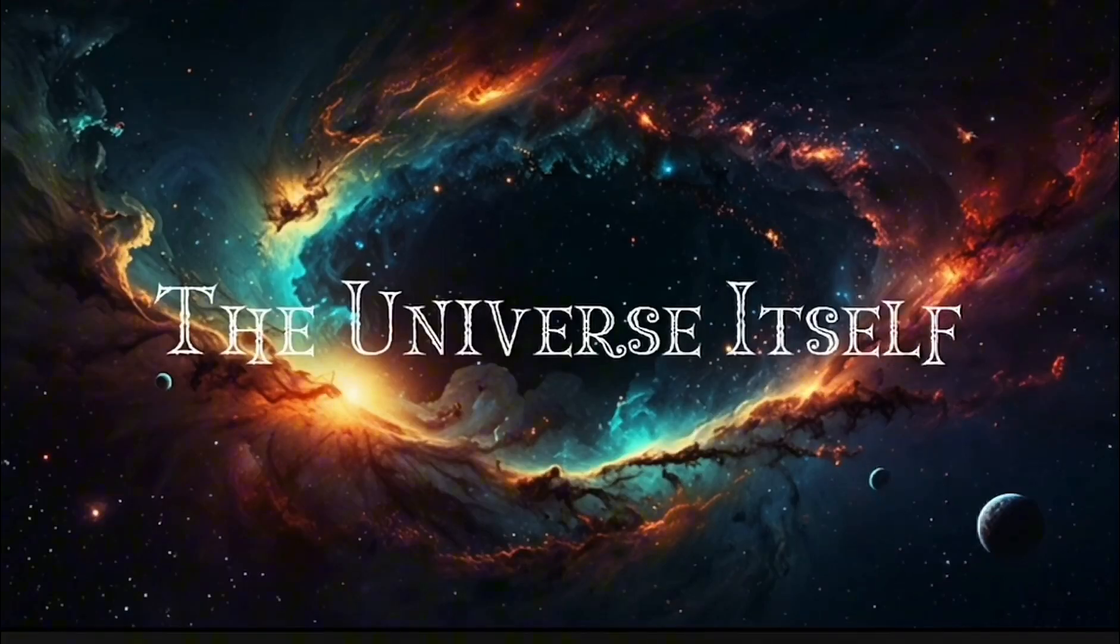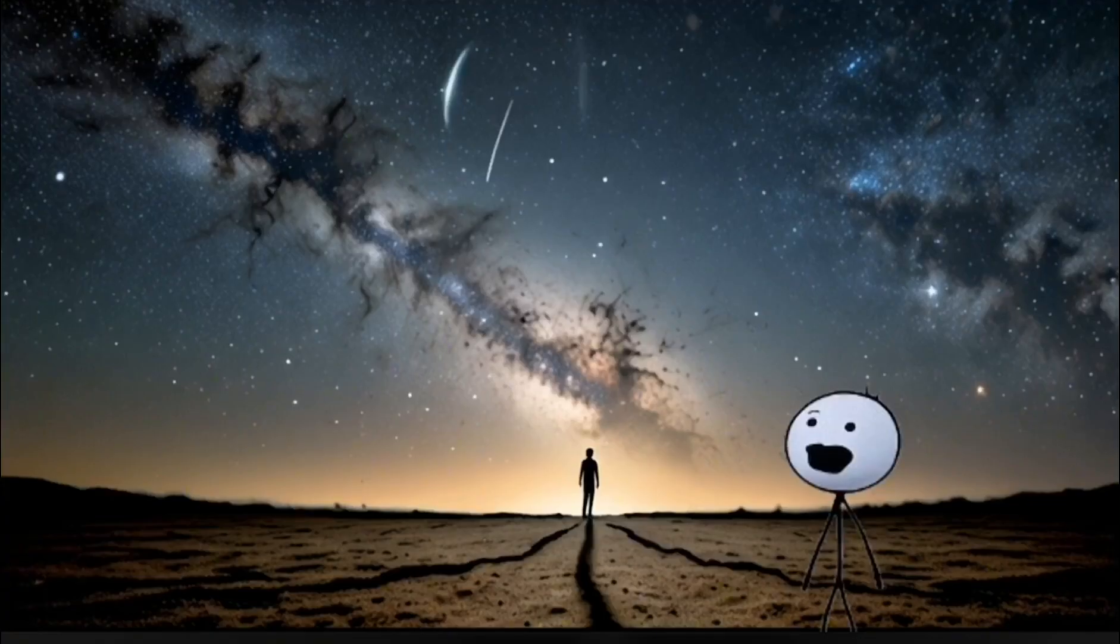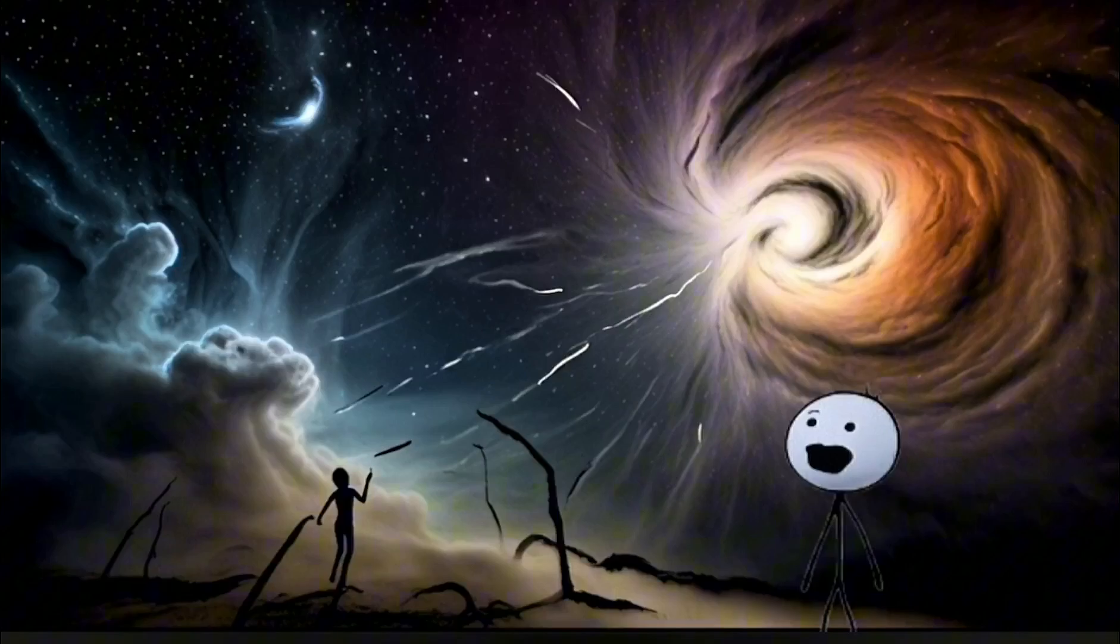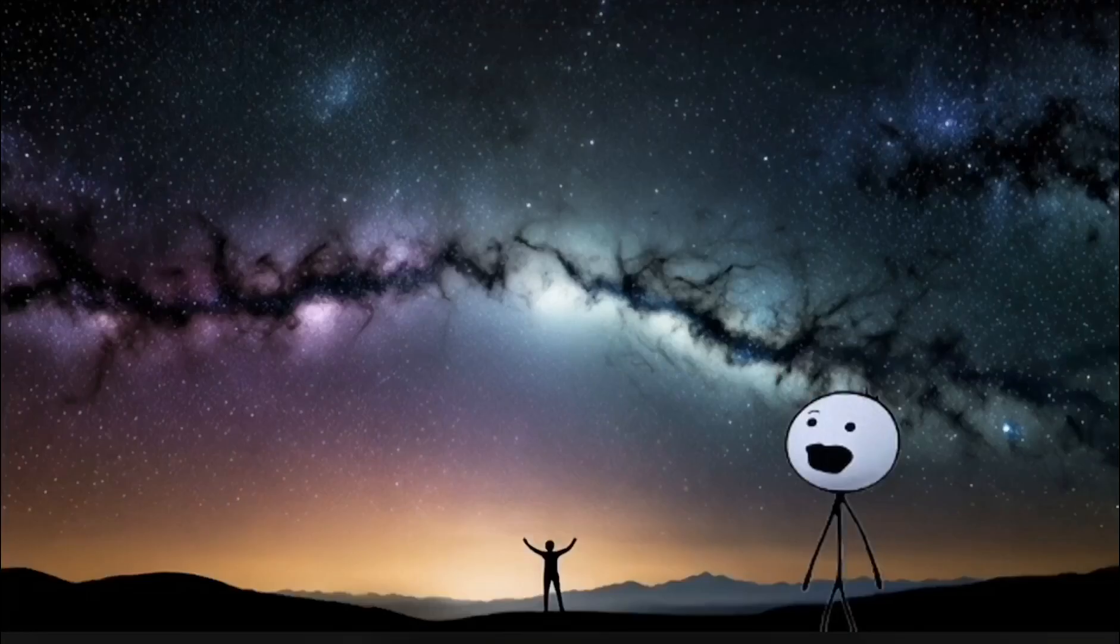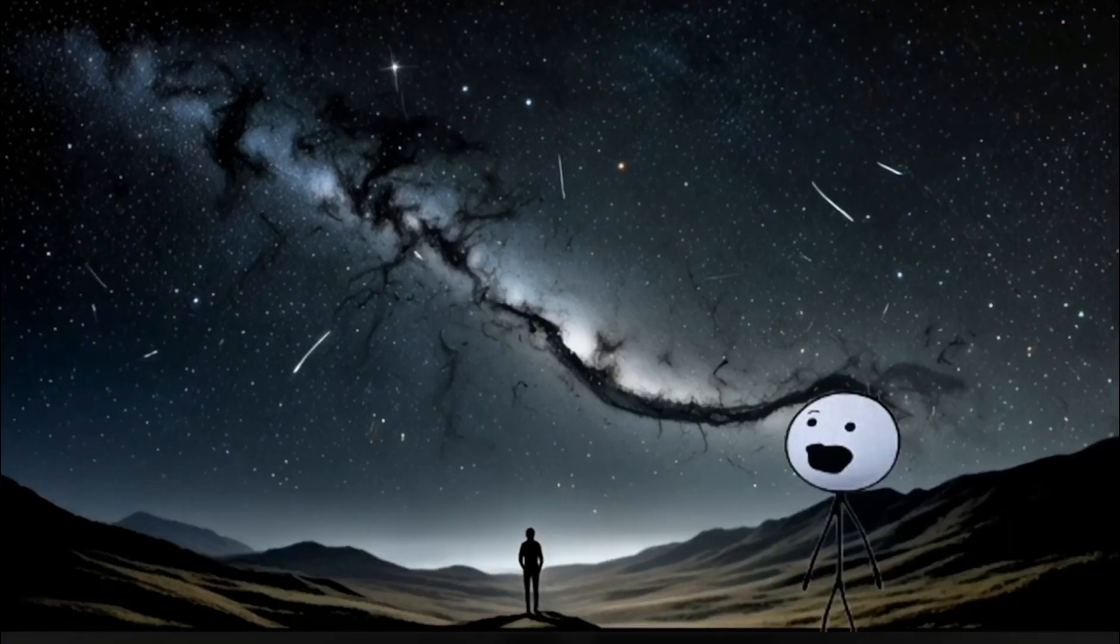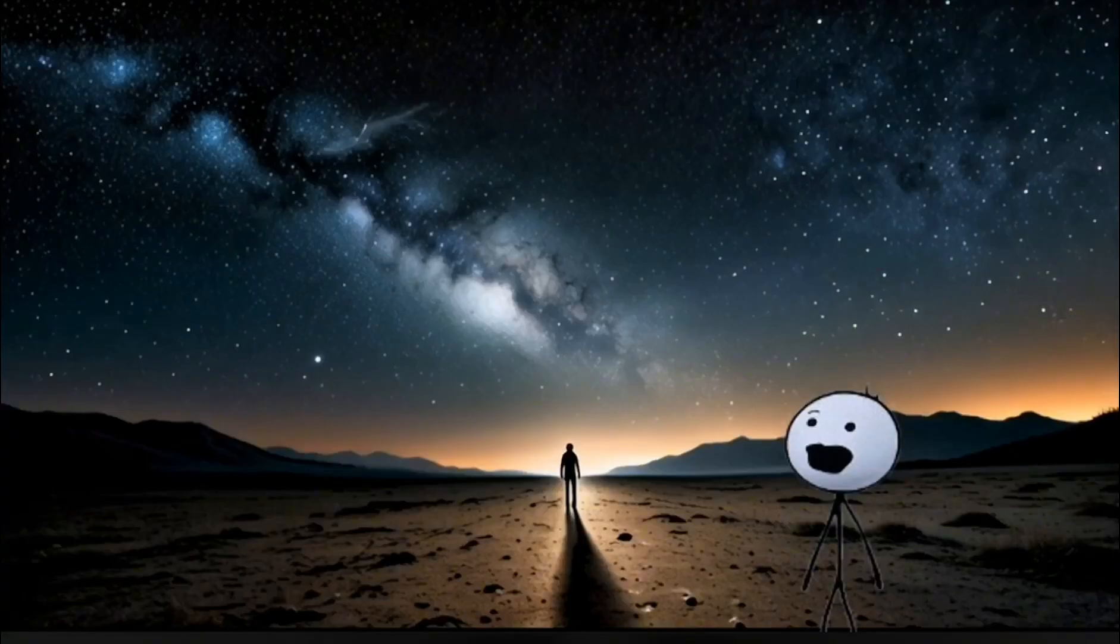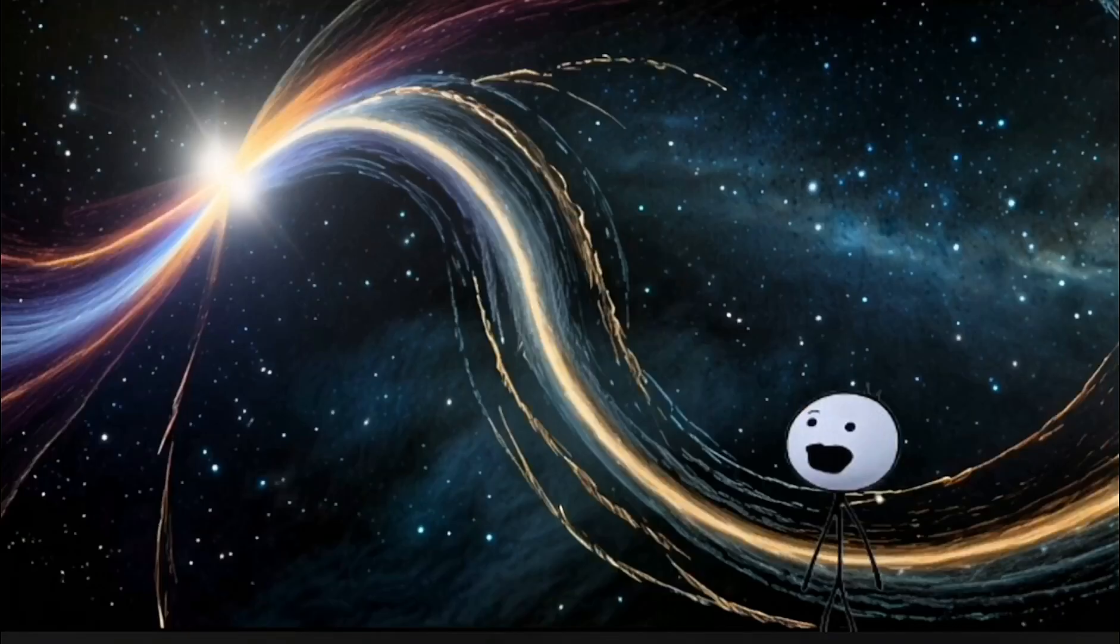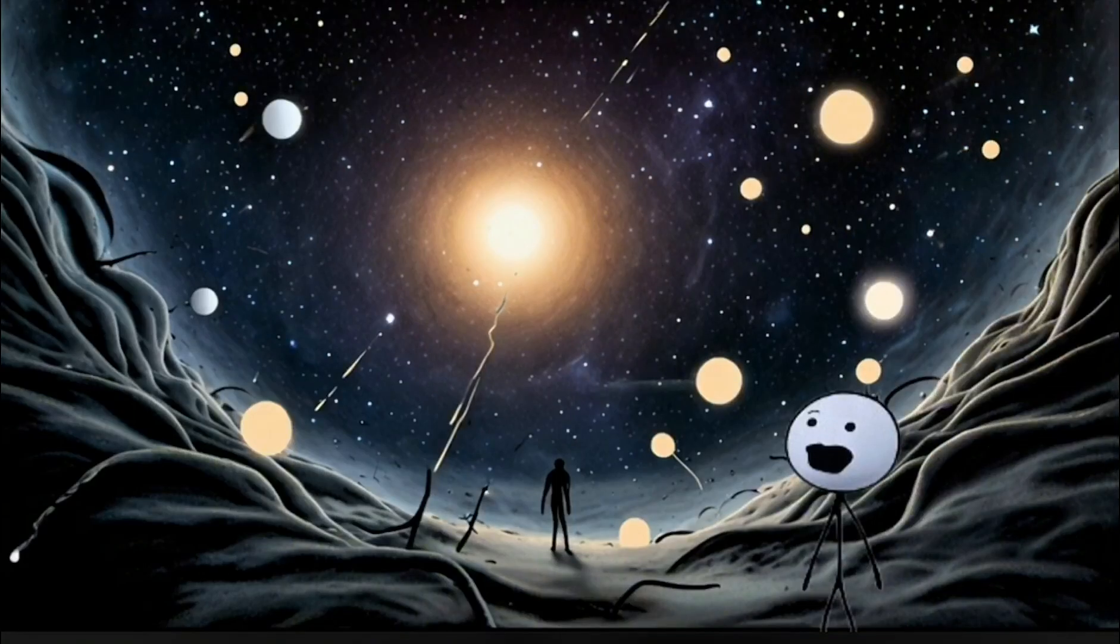Number 1: The universe itself. Here it is. The most terrifying thing in our entire universe is the universe itself. Not just because of how violent or mysterious it is, but because of how big it is. The observable universe is 93 billion light-years across. And that's just the part we can see. The rest? It could go on forever, or it could curve back on itself, or maybe it's one of infinite universes.